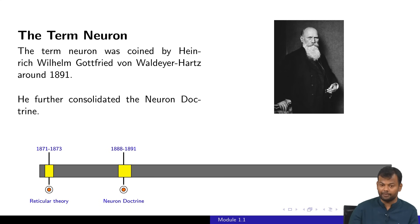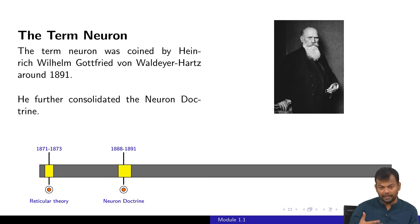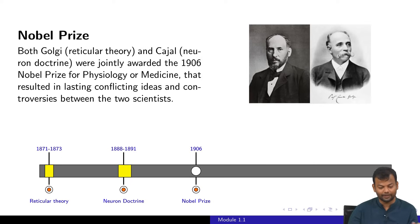That was done by this gentleman who coined the term neuron. Today when you hear about artificial neural networks or artificial neurons, the term neuron actually originated way back in 1891. This gentleman was responsible for coining that and for consolidating the neuron doctrine. Interestingly, he is not only responsible for coining the term neuron, but also for coining the term chromosome.